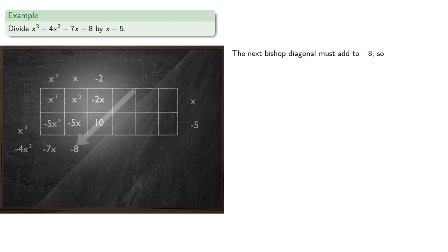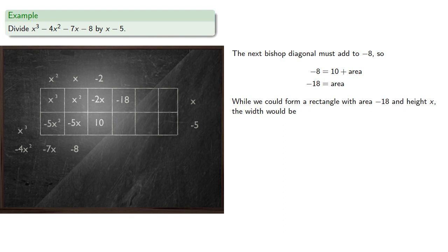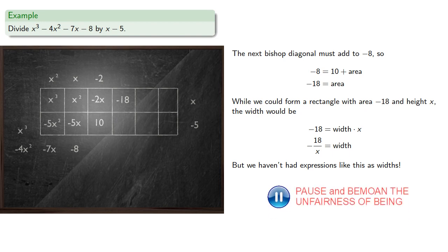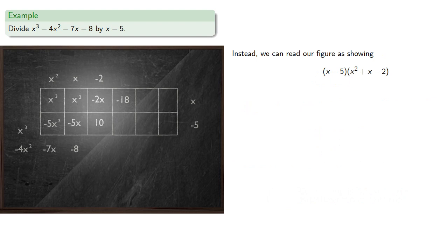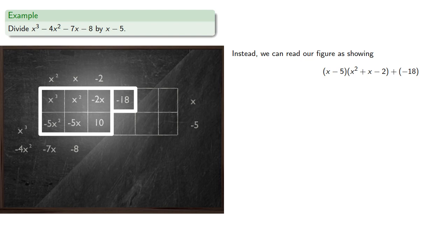The width of the third column is negative 2, so the area of the lower rectangle must be 10. The next bishop diagonal must add to negative 8, so negative 8 must be 10 plus the area, meaning the area will be negative 18. While we could form a rectangle with area negative 18 and height x, the width would be a fractional quantity, and we haven't had expressions like this as widths. So instead we read our figure as showing the product x minus 5 times x squared plus x minus 2 — that's this portion of the figure — plus negative 18, giving our original expression x cubed minus 4x squared minus 7x minus 8.